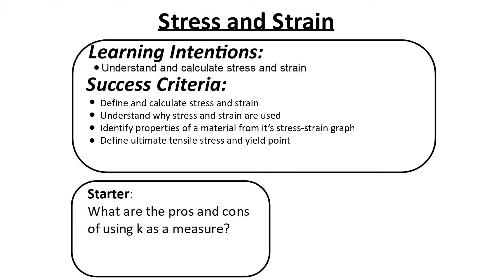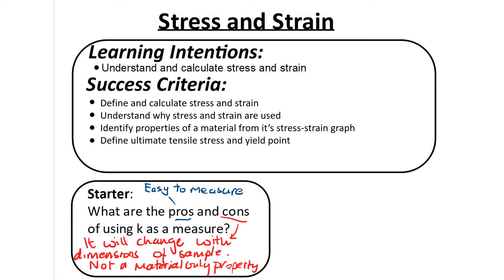Quick starter: think about the pros and cons of using k as a measure. K is the spring constant, found from the gradient of the force-extension graph. It is relatively straightforward to measure — we need a force and an extension, giving k = F/x, a measure of stiffness. A disadvantage is that k changes with the dimensions of a sample, so the same material in different sizes gives different values of k. It's not a material property.